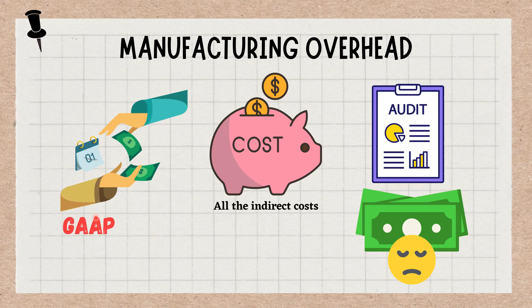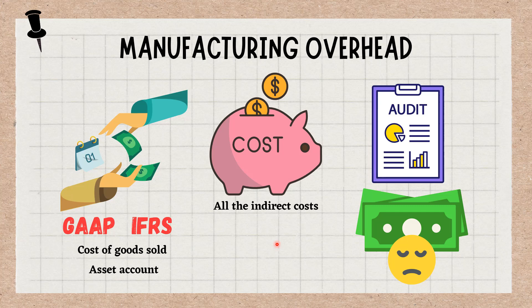When you create financial statements, both generally accepted accounting principles and international financial reporting standards require that you assign manufacturing overhead to the cost of products, both for reporting their cost of goods sold and their cost within the inventory asset account.